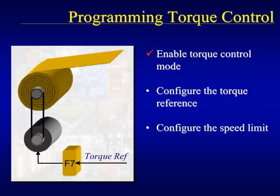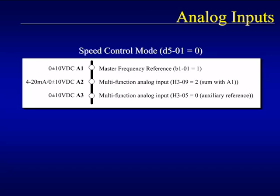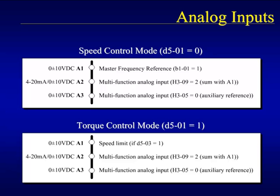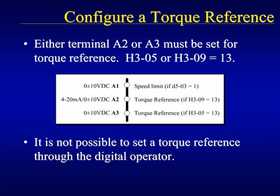Now that Torque Control is enabled, a torque reference must be configured so the drive knows how much torque the motor should output. Let's look at the analog inputs during speed control. The factory default settings for the analog inputs show terminal A1 as the master reference. Configuring the drive for Torque Control changes the function of terminal A1 from master speed reference to the speed limit function, whereas terminals A2 and A3 retain the same functions when in speed control. Either terminal A2 or A3 must have its function changed so the terminal becomes the torque reference. Setting one of those terminals for torque reference is accomplished by setting the respective terminal function selection parameter to setting 13. If a 4 to 20 milliamp signal is to be used for the torque reference, terminal A2 must be used as the torque reference terminal.